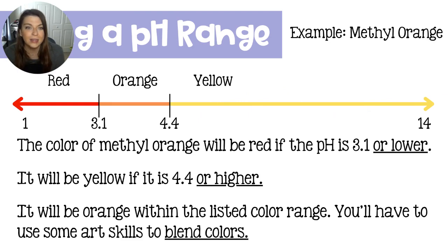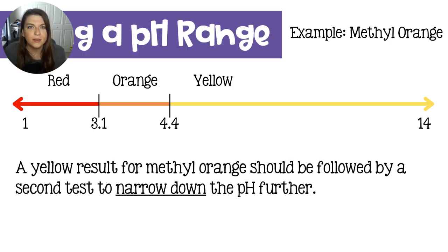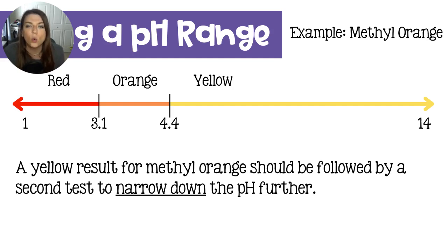So it's important that if you get a yellow result you go and check it again to see where the pH lies with another indicator. If you got a yellow result, you're going to want to use a second test with a new indicator in order to narrow down your pH further, because getting a yellow result on a methyl orange test tells you virtually nothing.